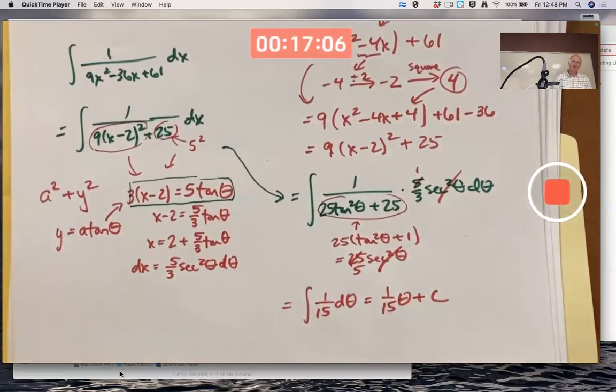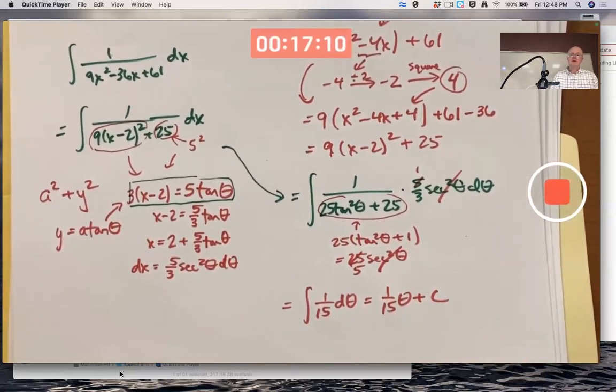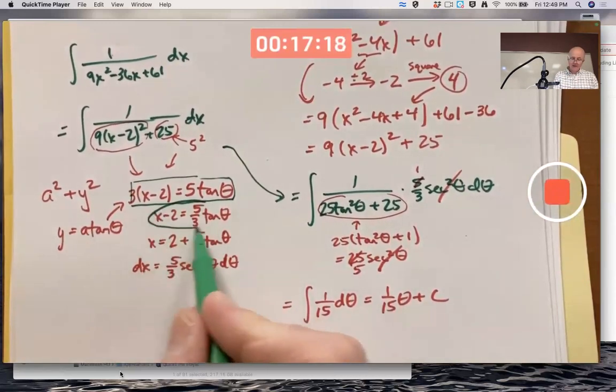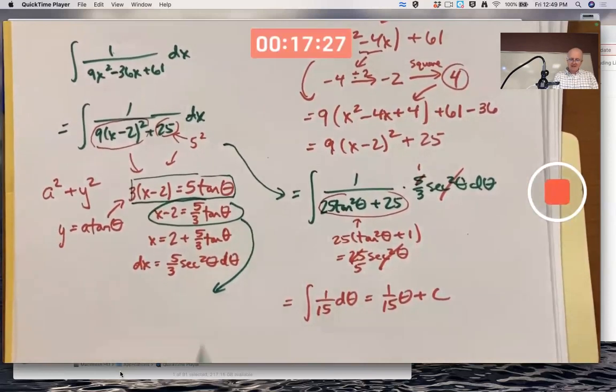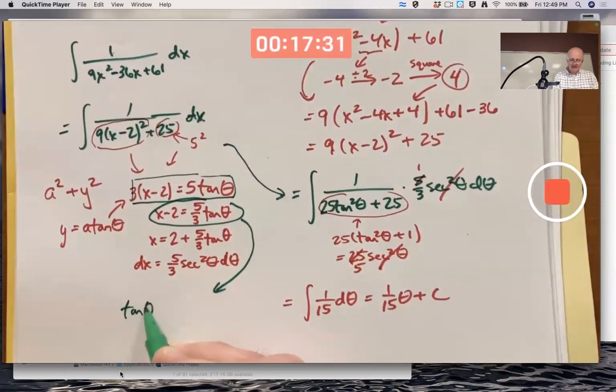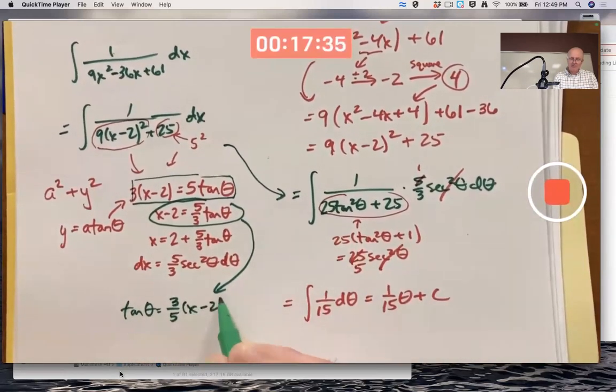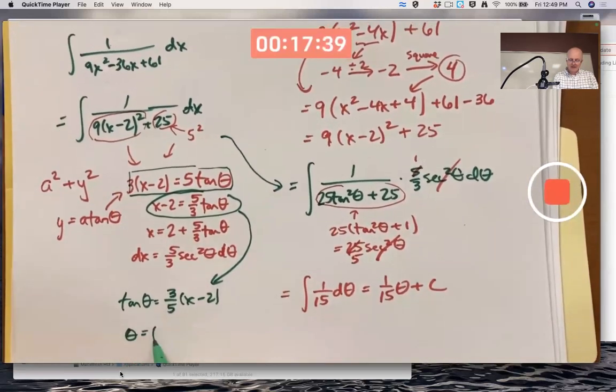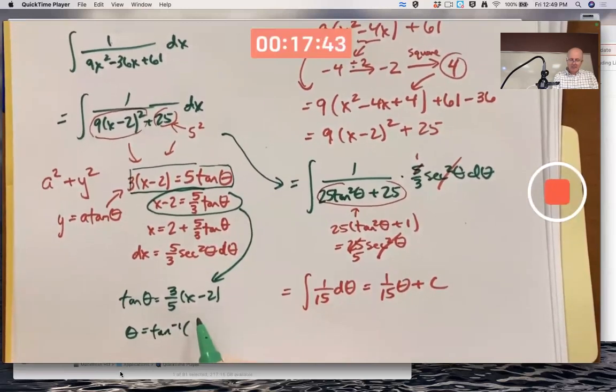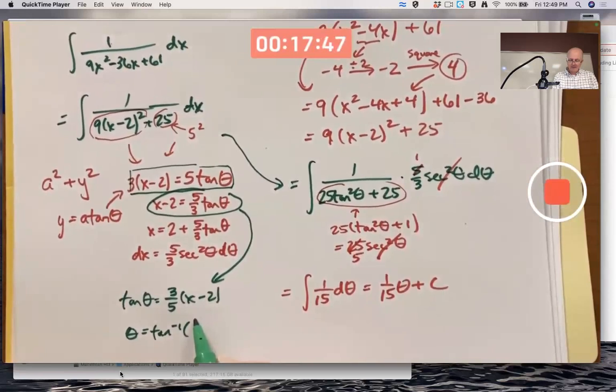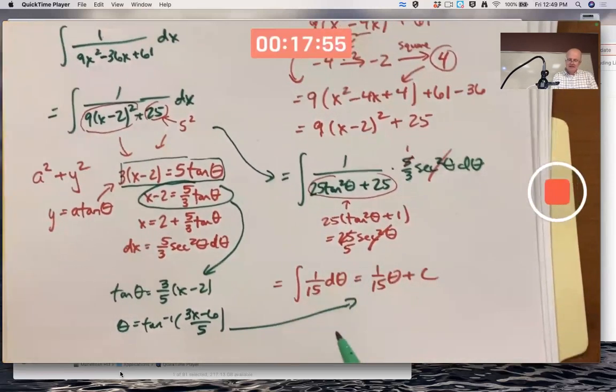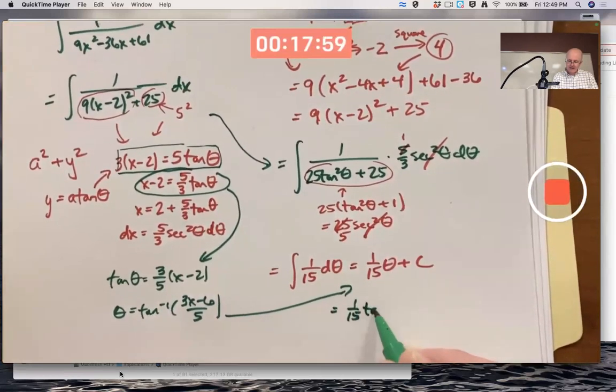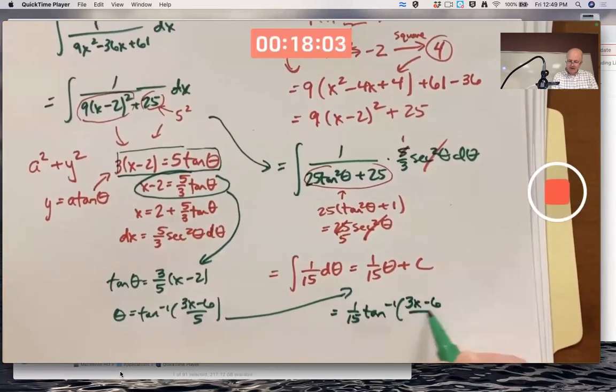We need to replace θ with its dependence on x. We could use this equation to solve for θ in terms of x. So, tan θ is 3/5 times (x - 2). θ is the inverse tangent of that. And I'll write that as inverse tangent of, I'll go ahead and multiply the 3 through the parentheses: (3x - 6)/5. And that's what now goes there to give us a final answer of 1/15 times the inverse tangent of (3x - 6)/5 plus C.